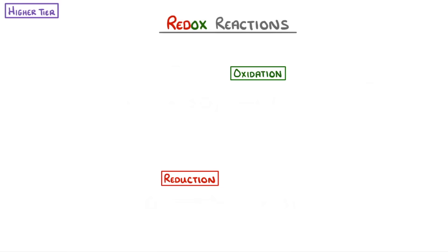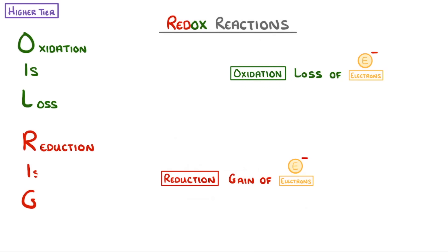The terms oxidation and reduction can also refer to the loss and gain of electrons though. And instead of just remembering which is which, most people use the mnemonic OIL RIG, which stands for oxidation is loss, reduction is gain, and this refers to electrons. So if we had a magnesium atom, and it loses two electrons to become a 2+ ion, then it's been oxidized. And if it gained those two electrons back, then it would have been reduced.